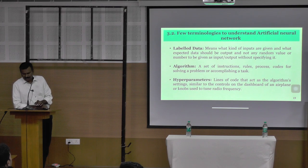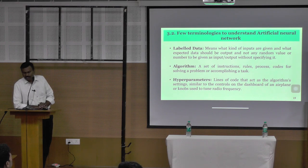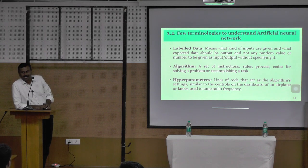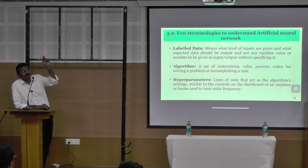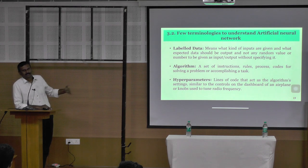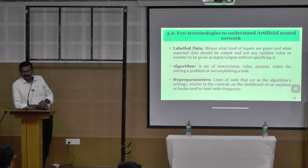Labeled data means: what kind of inputs are given and what expected output should come — not any random value given as input/output without specifying it. For example, I take a beam with uniformly distributed load — finally, I know I want the bending moment or shear force. I know what the input is and what the expected output is. That is called labeled data. For example, a pond is labeled data; a river is unlabeled data.